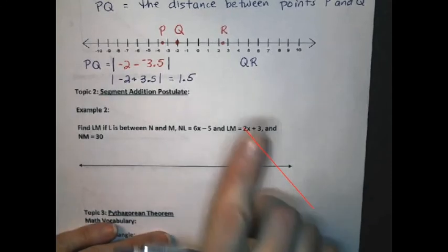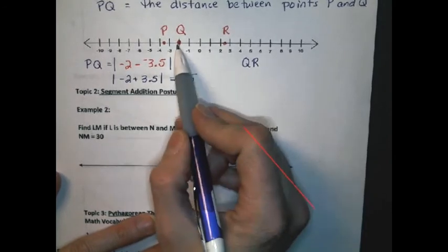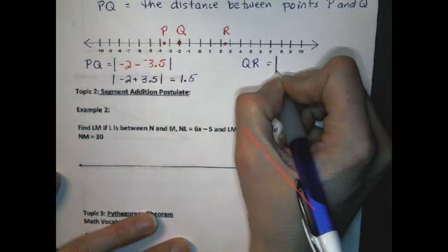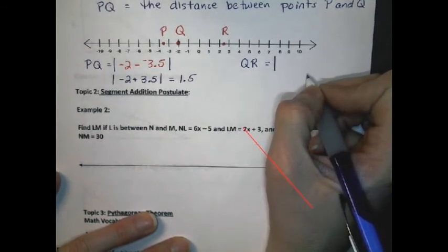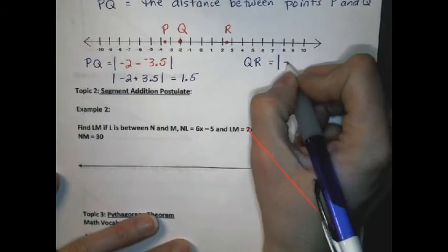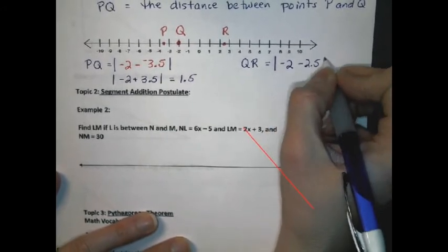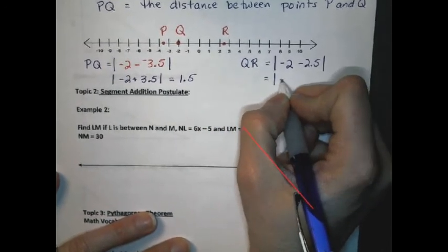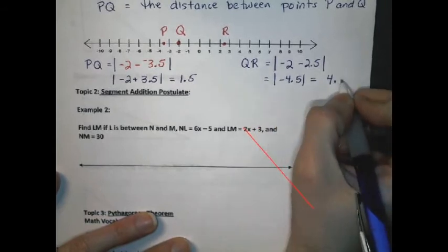Next, we're going to find the distance of QR. That would be the distance between the points Q and R. In order to do so, we are going to use the absolute value and the coordinate that goes with Q, of course, is negative 2 and we're going to subtract 2.5 for R. In doing so, I get the absolute value of negative 4.5, which equals a positive 4.5.